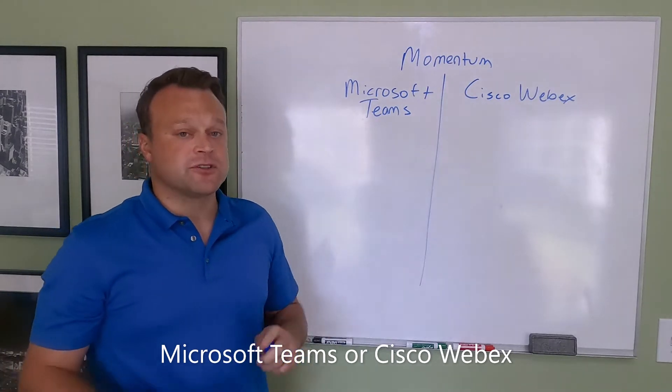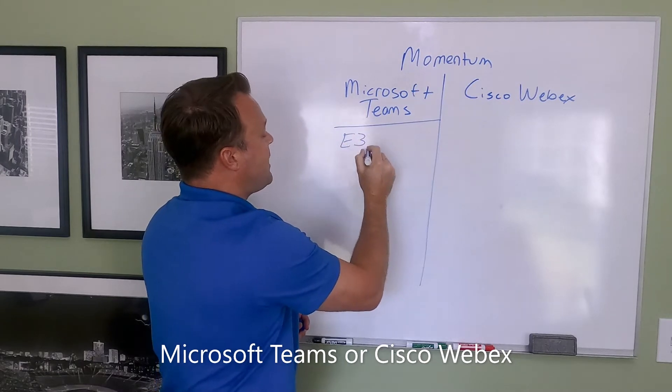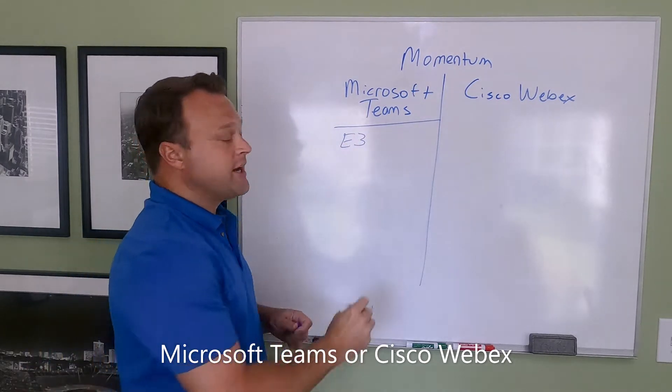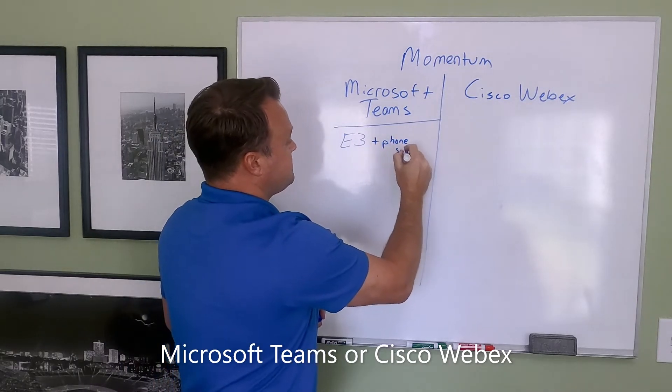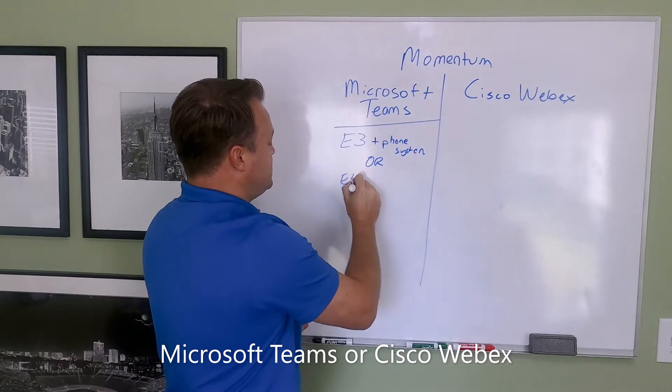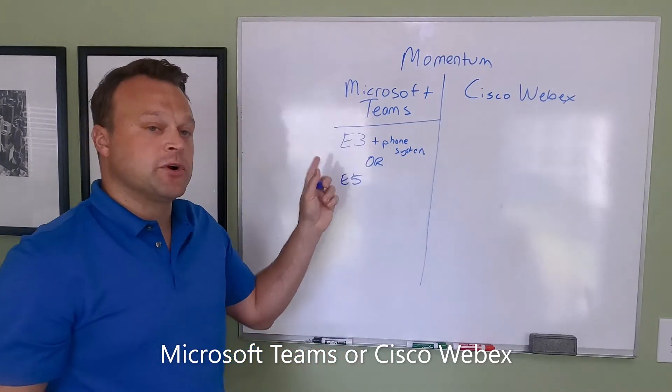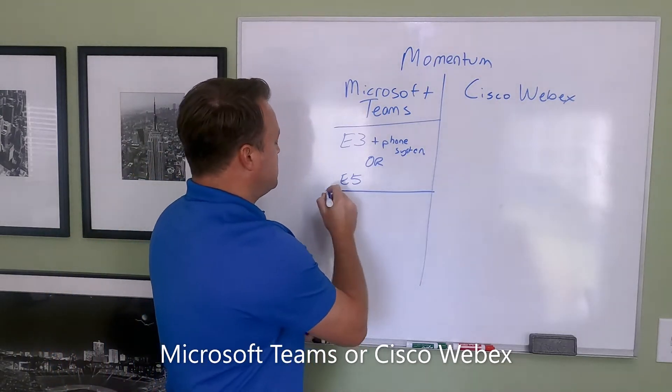Let's start with Microsoft Teams, one that I'm sure lots of you have had conversations with customers about. The first thing you need is an E3 license with Microsoft, plus the phone system license, or you need an E5 license. Typically, this licensing is purchased through a CSP, an MSP, something of that sort.